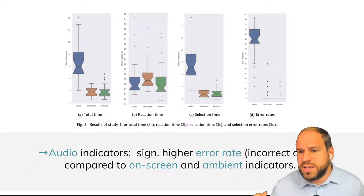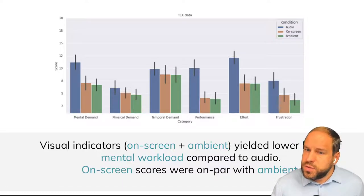We looked at the audio indicators and their significantly higher error rate. So the incorrect clicks for the audio indicators compared to on-screen and ambient indicators. Quite interesting. Also, the visual indicators, the on-screen and ambient, yielded lower levels of mental workload. So a little bit easier to process. And on-screen scores were on par with ambient.